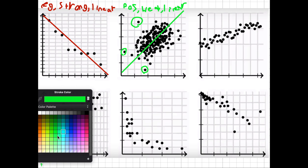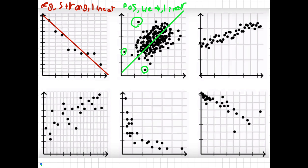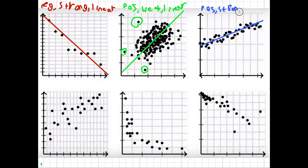Now let's change colors — maybe blue, just for fun. So what is the line of best fit here? I would think it's something like that, somewhere in the middle. So this is a positive, reasonably strong relationship. And I think it's a linear relationship. And what is the most outlying thing here? There are probably no outliers here, because most of the points fit this line pretty well.